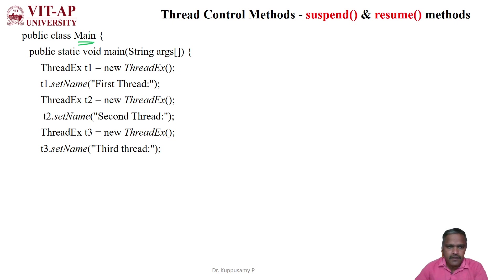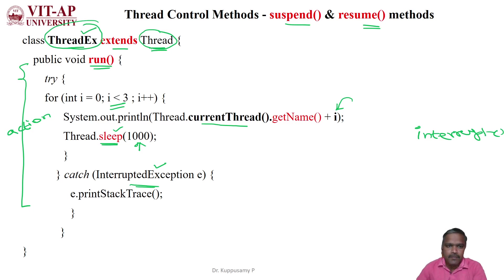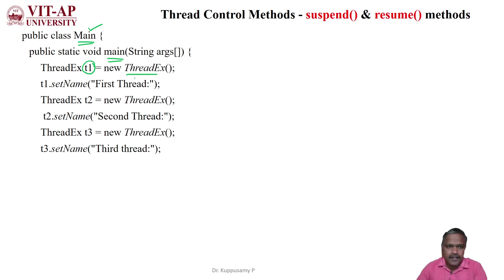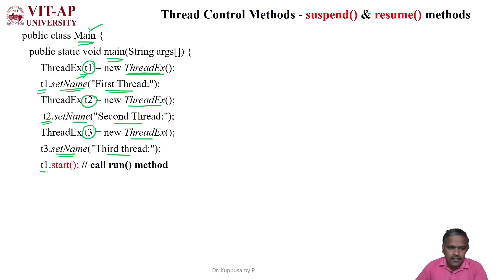I am defining the main class here, which is the driver class because it contains the main method. We are creating thread t1 using the user-defined class threadex, which has the capabilities of the Thread class because it extends Thread. For t1 we are setting the name as 'first thread', then creating another thread t2 and setting its name as 'second thread', and one more thread t3 is created and named 'third thread'.